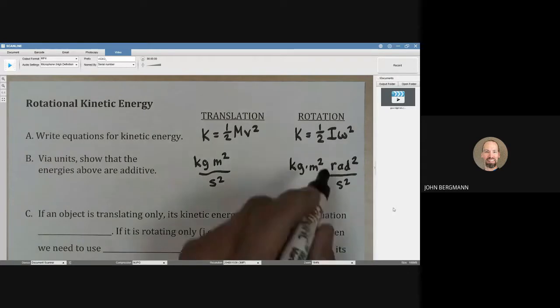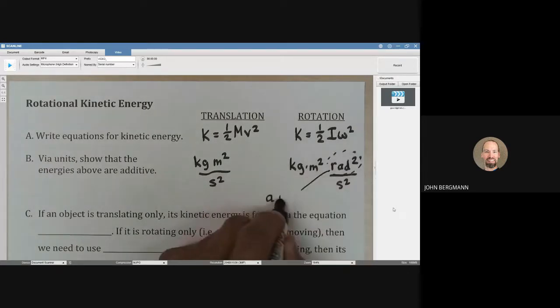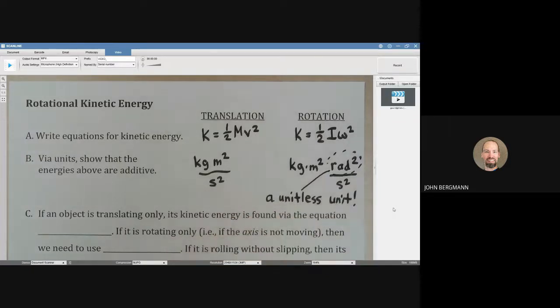Well, here's the thing. A radian is a unitless unit. A radian is kind of nothing. And so what we end up with is kilogram meters squared per second squared for both cases.